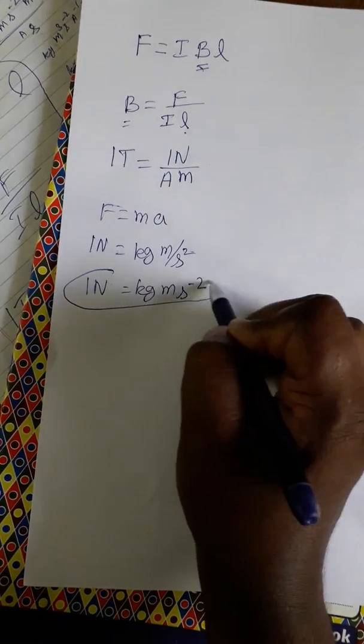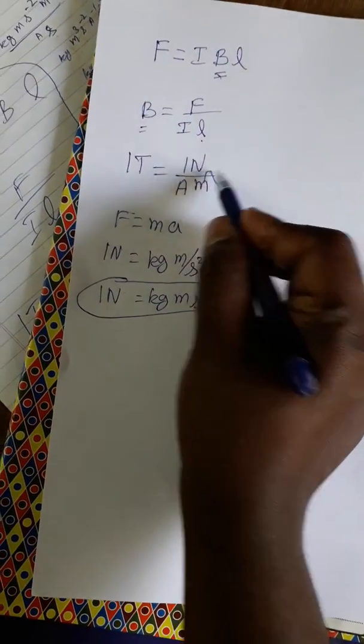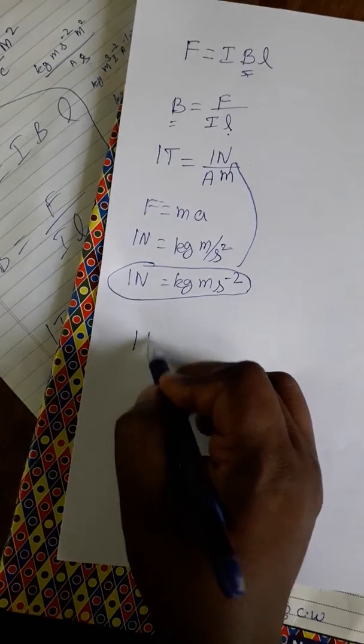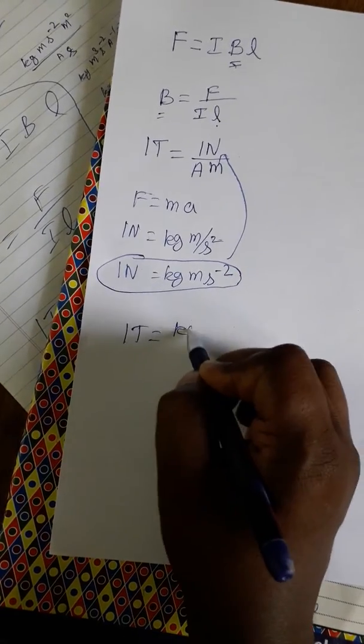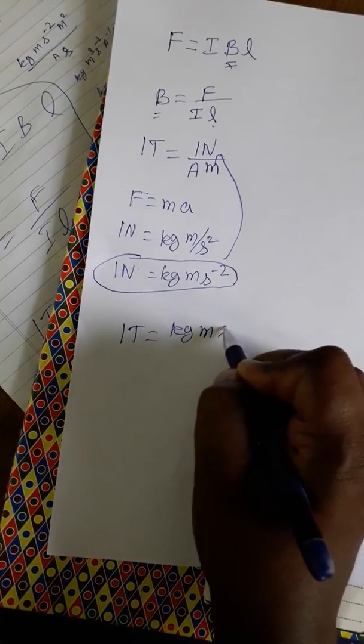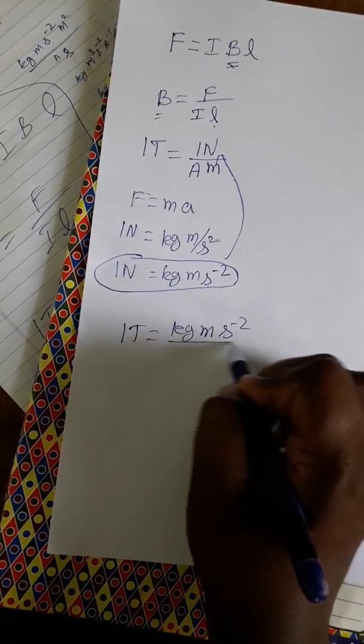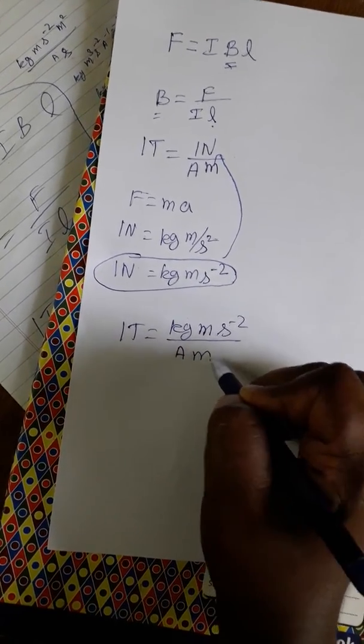So substitute this in this place. So one Tesla is equal to kg meter per second minus two ampere meter.